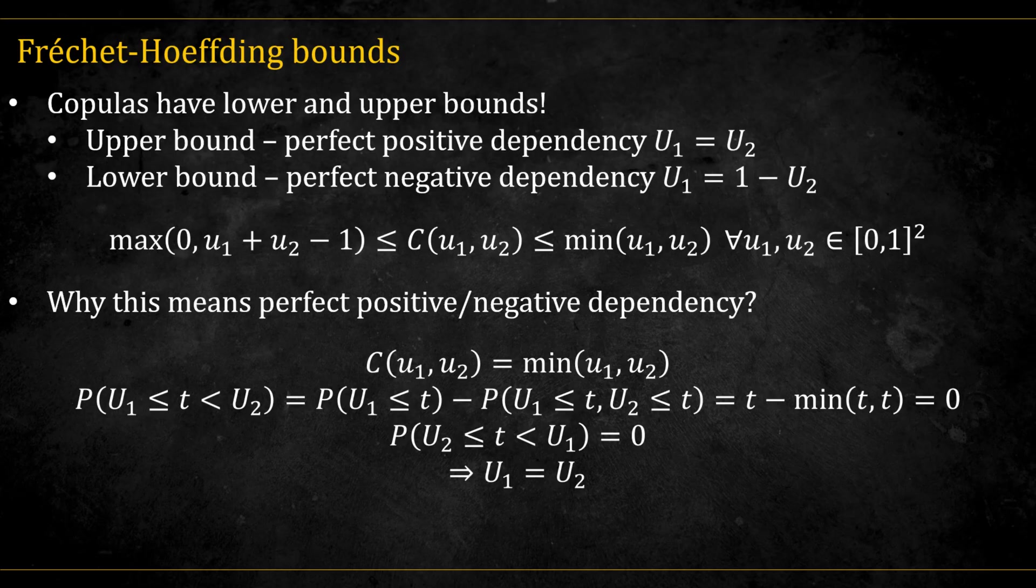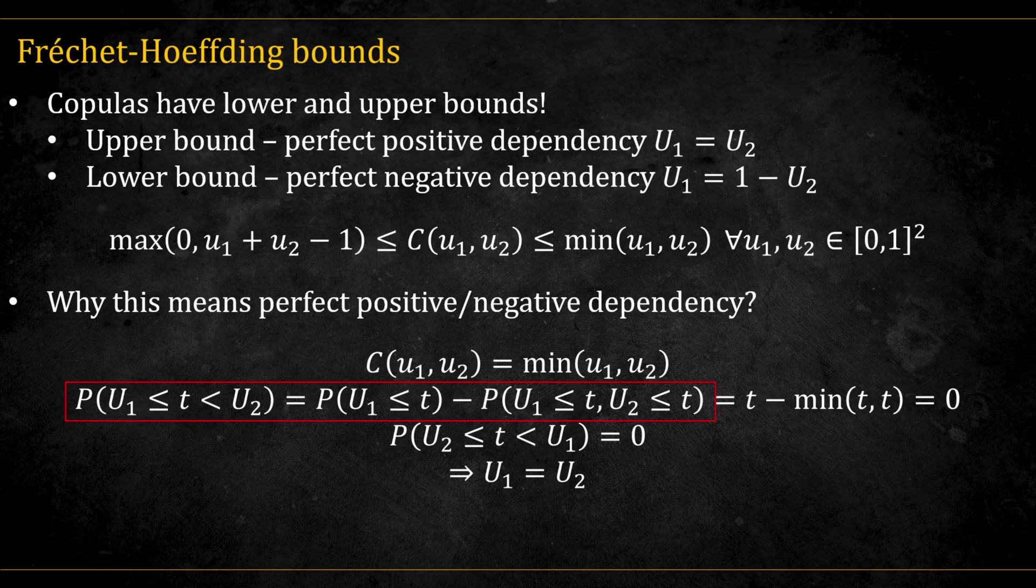Now, why does this mean perfect positive or negative dependence? Let's show for the positive case. If we have a copula equal to the upper bound, we can see that the probability of u2 being greater than u1 can be expressed by this formula.